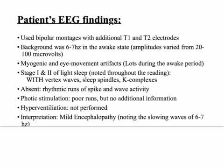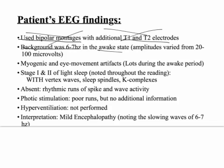So let's talk really quick about our patient's EEG findings. It says they used bipolar montages with additional T1 and T2 electrodes — probably super low yield, but we'll talk about it anyway. There was a background of 6 to 7 hertz in the awake state. Amplitude varied from 20 to 100 microvolts. I honestly thought our patient was in a coma, so I'll admit there's some confusion on my part here.